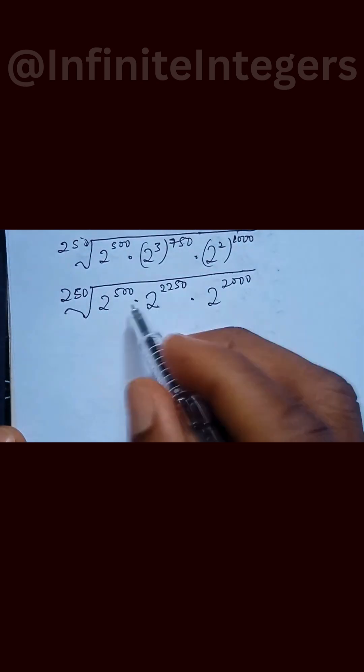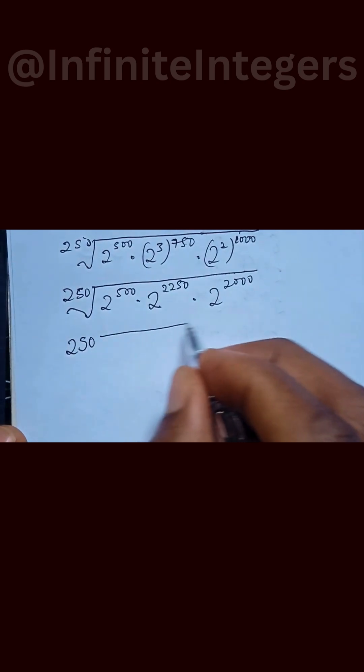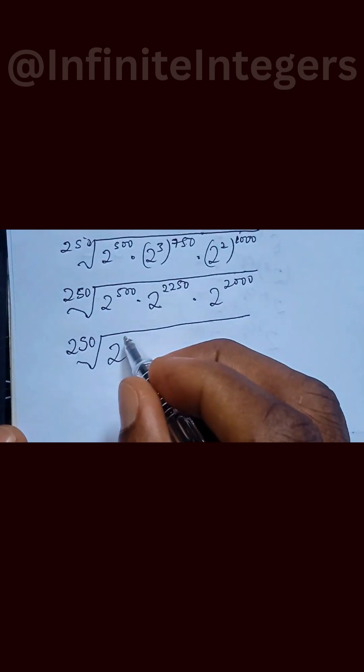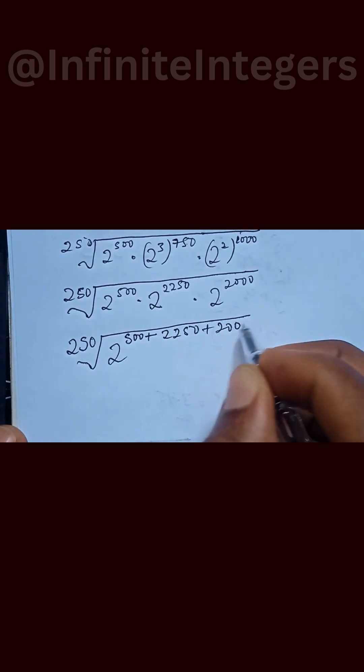So we add the exponents, so we have 250th root of 2 to the power of 500 plus 2250 plus 2000.